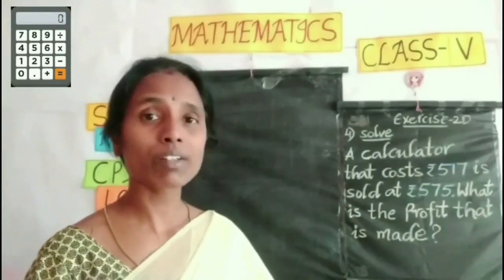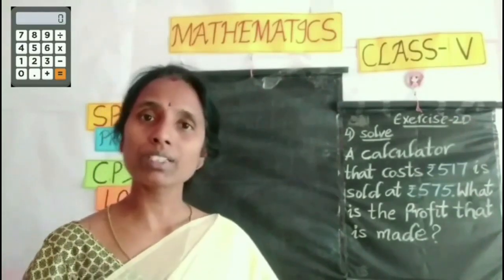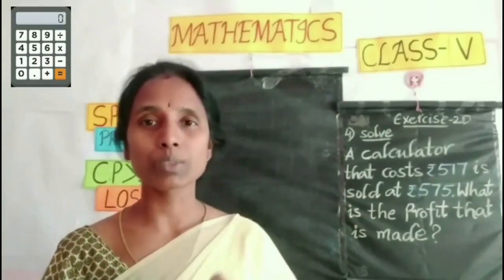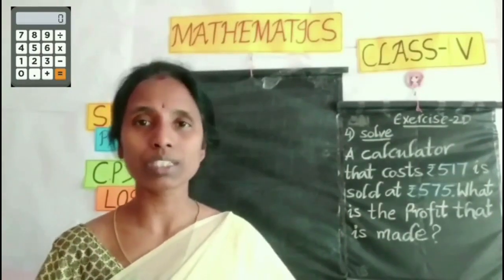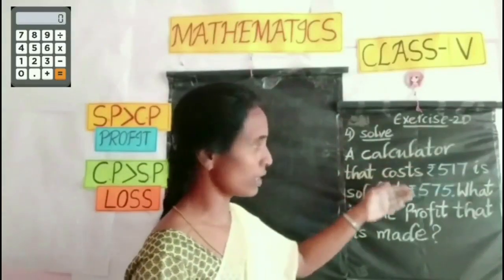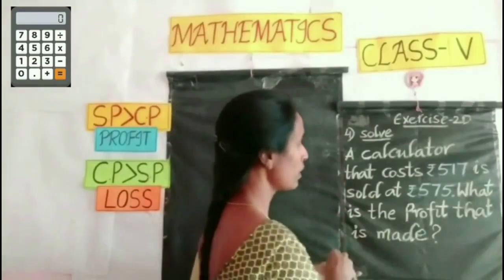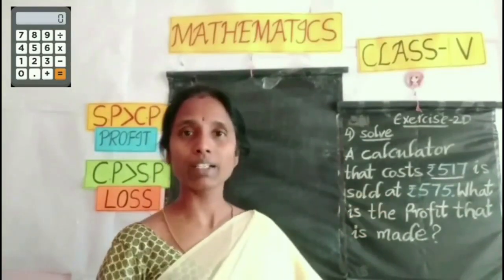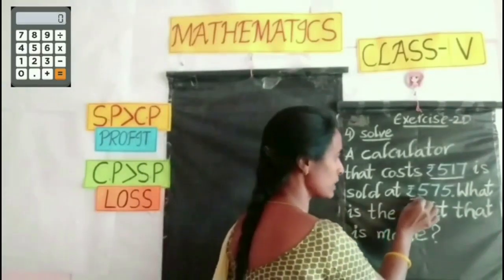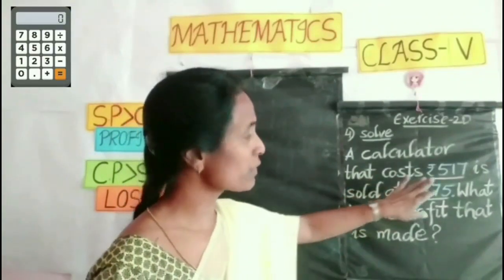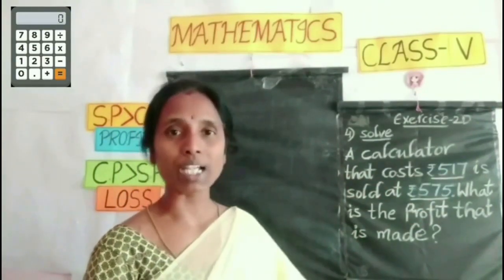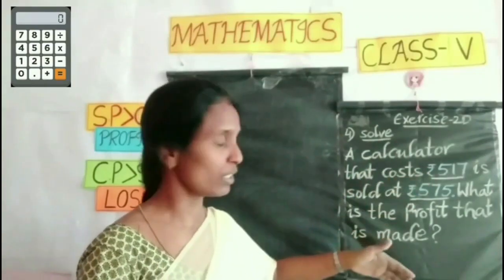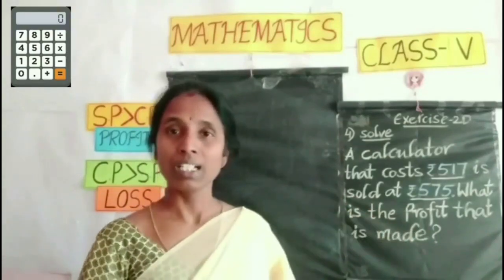A calculator that costs 517 rupees is sold at 575 rupees. What is the profit that is made? First we find the cost price and selling price: 517 rupees is the cost price of the calculator and 575 rupees is the selling price. Since SP is greater than CP, we get profit.